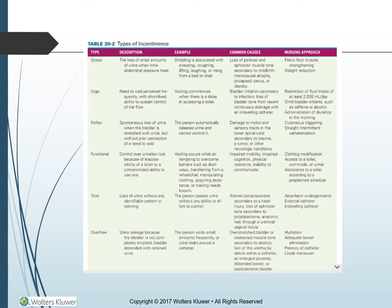Urge incontinence is the need to void perceived frequently with short-lived ability to sustain control — voiding commences when there is a delay in accessing a toilet. Common causes: bladder irritation secondary to infection, or loss of bladder tone from recent continuous drainage with an indwelling catheter. Nursing approach: maintain fluid intake of at least 2,000 milliliters per day, omit bladder irritants such as caffeine or alcohol, and administer diuretics in the morning rather than at night.